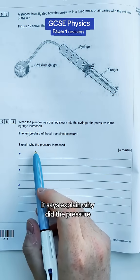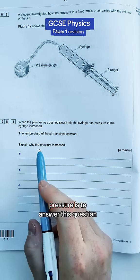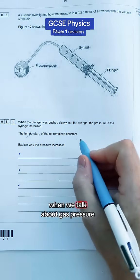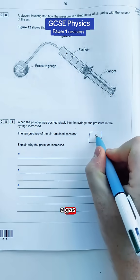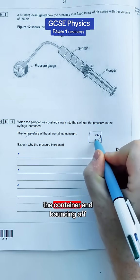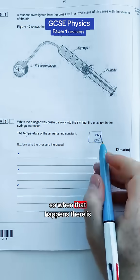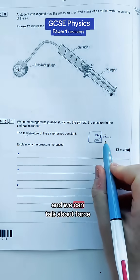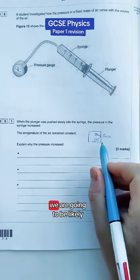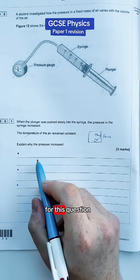So let's explain why did the pressure increase. We need to know what gas pressure is to answer this question. When we talk about gas pressure, we are talking about particles inside a gas that are hitting the side of the container and bouncing off. So when that happens, there is a force exerted, and if we can talk about force and collisions, we are going to be likely to get close to three marks for this question.